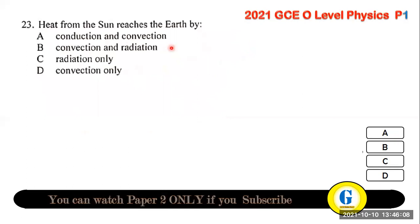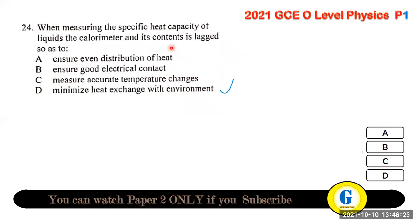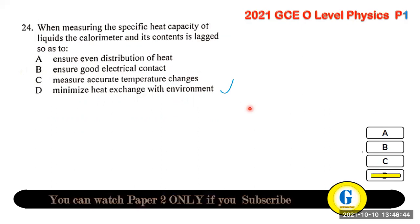Question 23: heat from the sun reaches the Earth by radiation. Question 24: when measuring the specific heat capacity of a liquid, the calorimeter and its contents are lagged to minimize heat exchange (heat losses) with the environment.